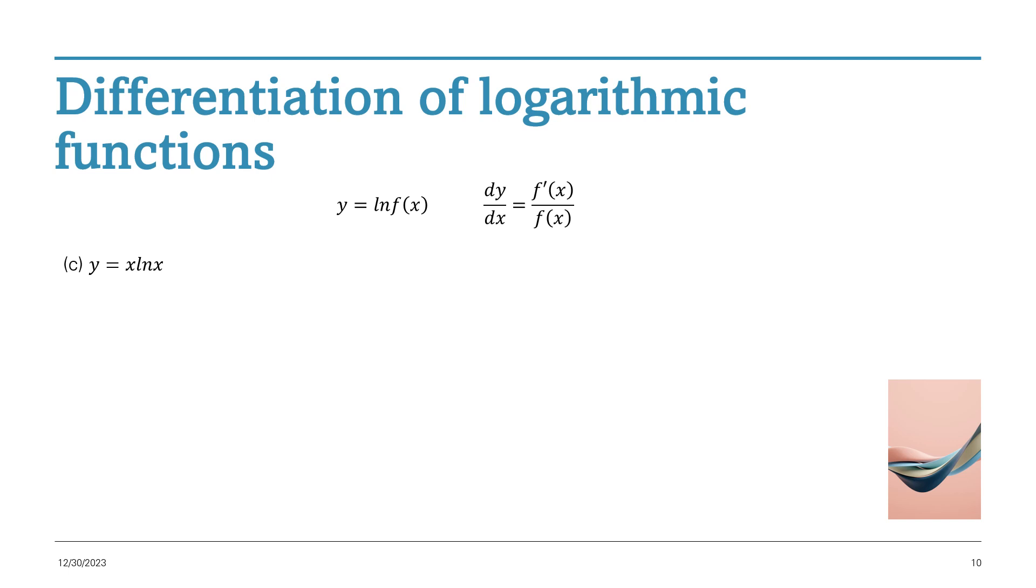This one, x times ln x. So hopefully you can pick that this is actually a product rule. One function, x, times another function, ln x. So you let u equal to x and v equal to ln x, u' is 1 and v' is 1 over x. Putting that into our product rule, we get x times 1 over x plus ln x times 1. Simplified gets you 1 plus ln x.